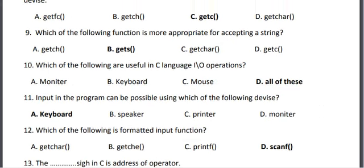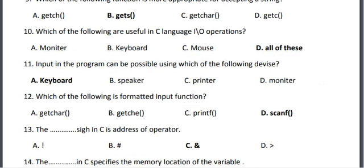Tenth, which of the following are useful in C language IO operations? The correct answer is option D, all of these. Eleventh, input in the program can be possible using which of the following device? The correct answer is option A, keyboard.